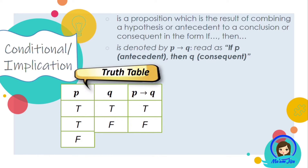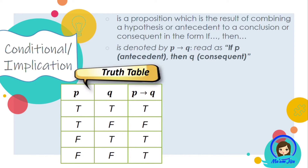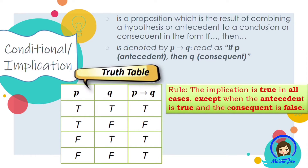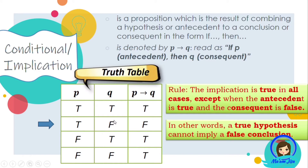The truth table of a conditional proposition shows that if P is false and Q is false, the implication is true. What have you observed with the table? The implication is true in all cases except when the antecedent is true and the consequent is false. The implication is only false whenever the conclusion is false. This means that a true hypothesis cannot imply a false conclusion.